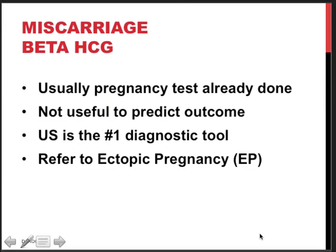Regarding miscarriage and beta-HCG: the pregnant woman may have already done a home pregnancy test, which are quite reliable and sensitive nowadays. However, a pregnancy test is not a useful predictor of outcome because beta-HCG will stay positive for quite a while. Ultrasound is the number one tool to determine whether the pregnancy is viable or not.